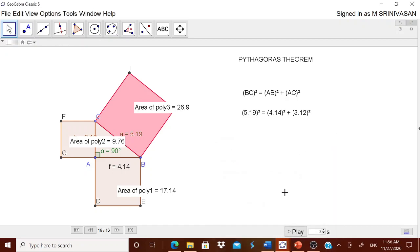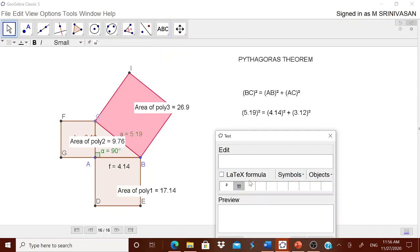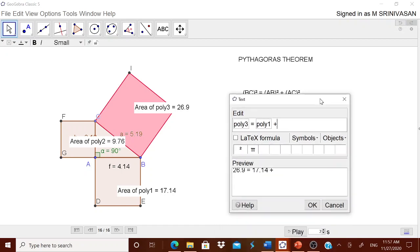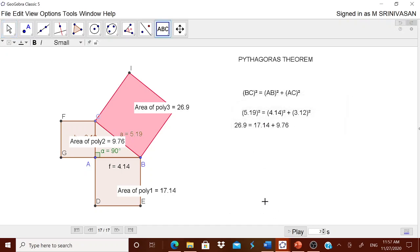I will come out. Once again ABC. The first one is poly 3. Therefore poly 3 is equal to poly 1 plus poly 2. I am clicking OK. The number has come over here now.